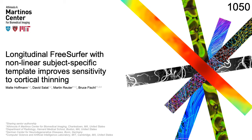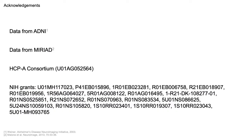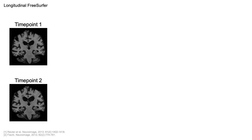I am going to talk about improving the sensitivity of longitudinal FreeSurfer using a nonlinear within-subject template. In brain morphometry studies, longitudinal design has become increasingly popular because it can improve sensitivity over cross-sectional processing.